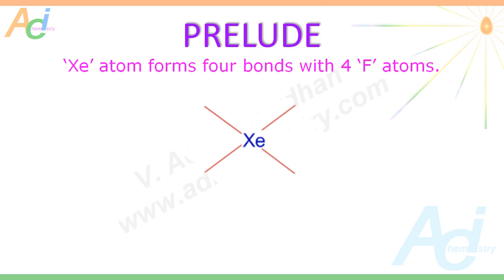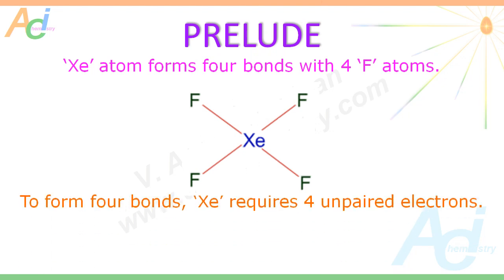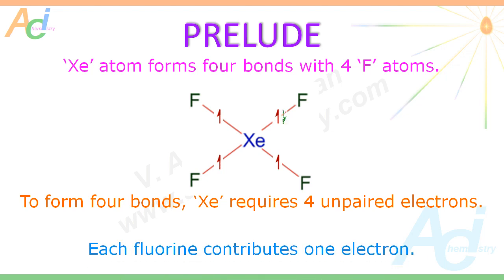Let us start with the simplest approach, that is by using Lewis's model. In xenon tetrafluoride, the xenon atom makes four bonds with four fluorine atoms. It requires four unpaired electrons, while fluorine atoms also contribute one electron each. Thus, four covalent bonds are formed between xenon and fluorine atoms.